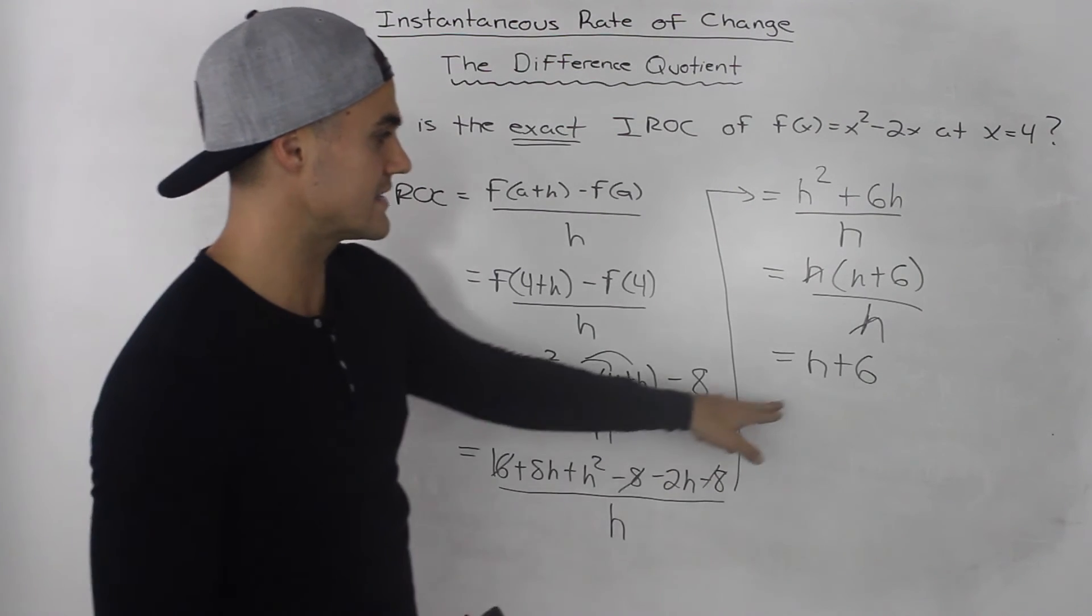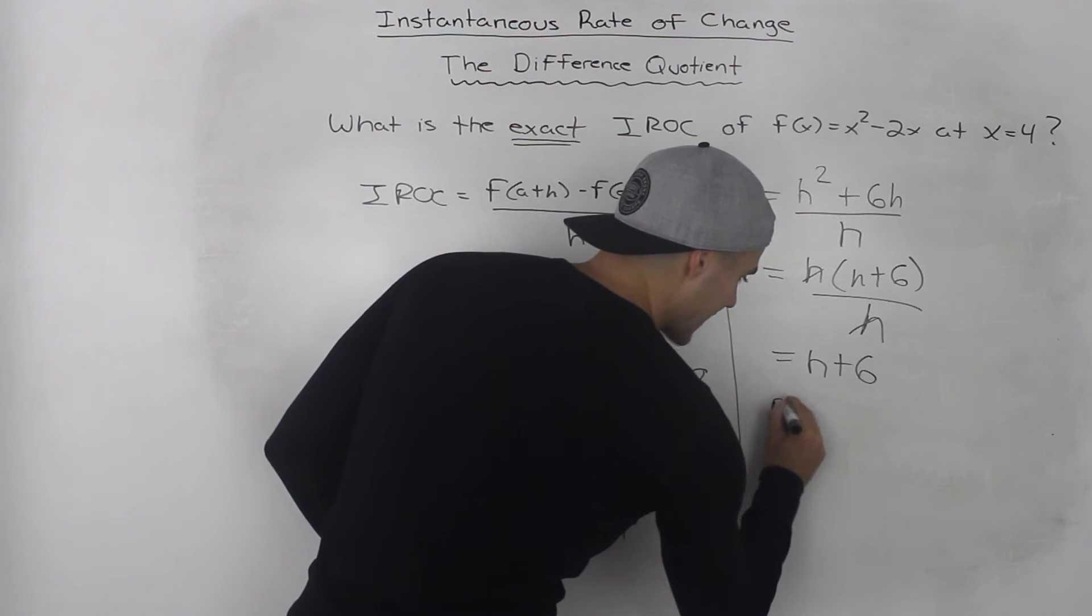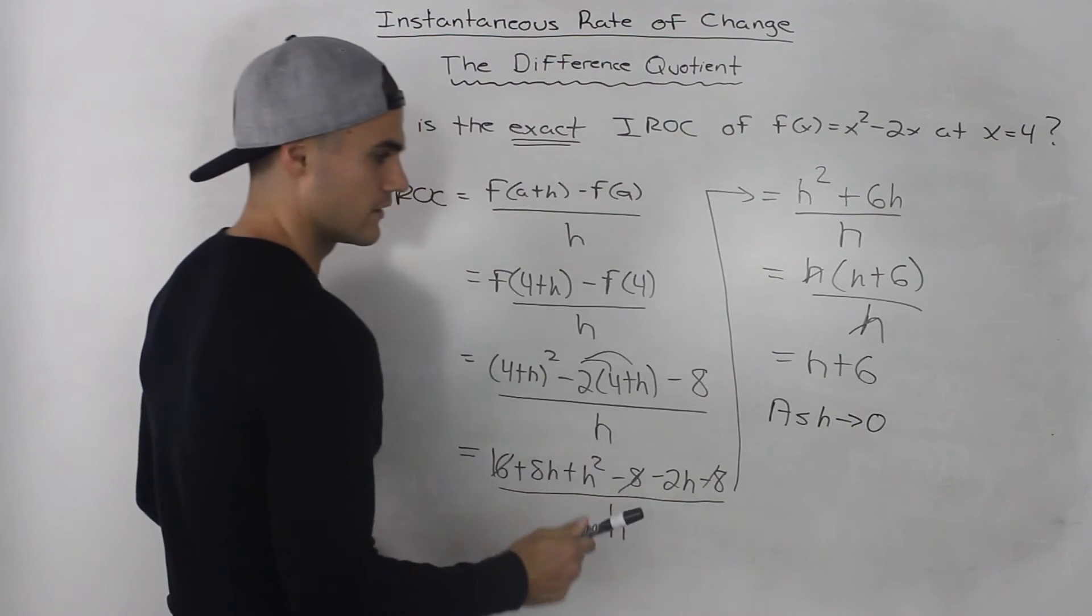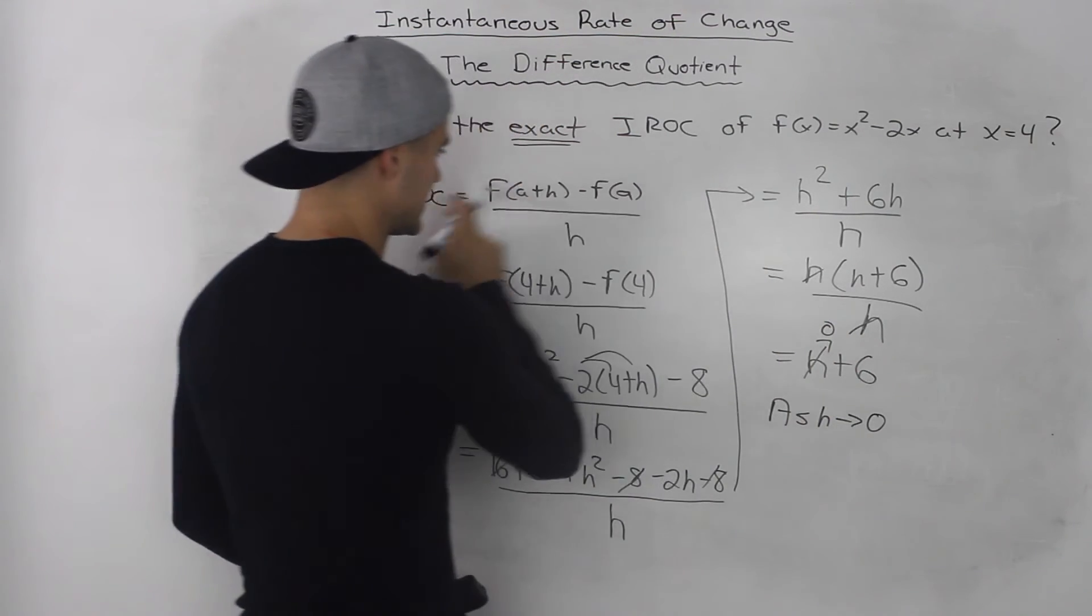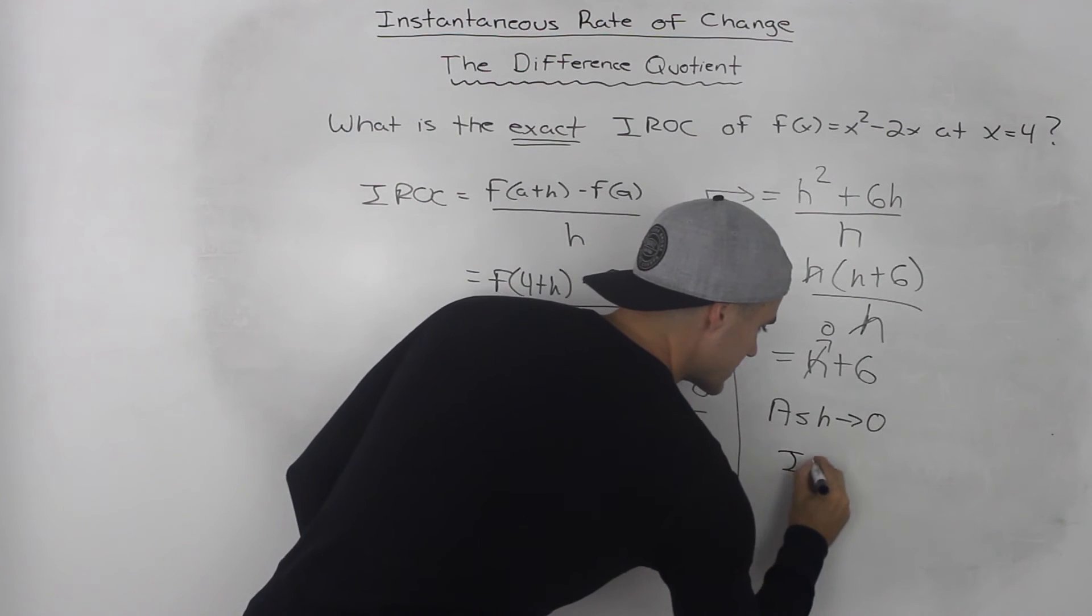So we can get the exact instantaneous rate of change as h goes to 0. And as h goes to 0, the instantaneous rate of change would be 6.